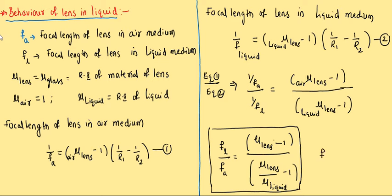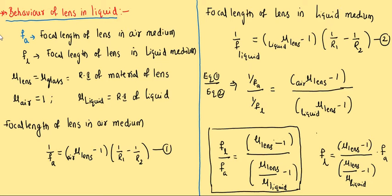So the final formula for the focal length of the lens in liquid is: FL = [(n_lens - 1) / (n_lens/n_liquid - 1)] × FA. This is the key equation we will use for analyzing three cases.